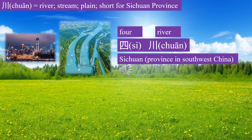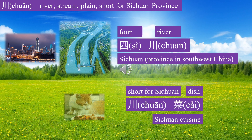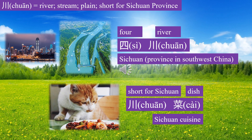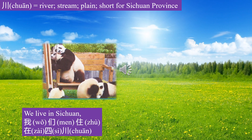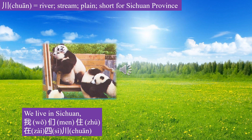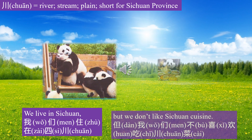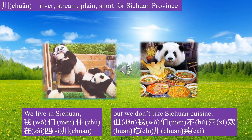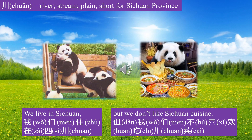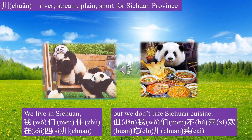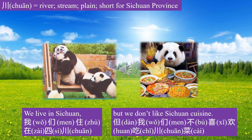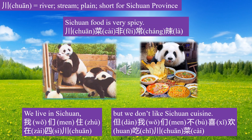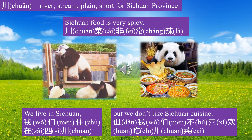Sichuan, 四川. 四川菜 means Sichuan cuisine, 川菜. We live in Sichuan — 我们住在四川 — but we don't like Sichuan cuisine — 但我们不喜欢吃川菜. Sichuan food is very spicy — 川菜非常辣.